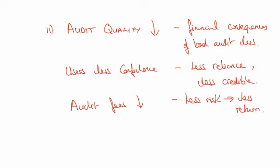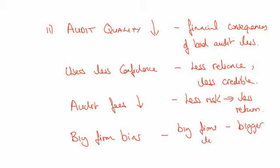Finally, a tricky one: big firm bias. If limited liability agreements were in place, big firms have bigger resources, so they can take on bigger liabilities. If they've got bigger liability agreements, that gives them an unfair advantage in getting clients. A small firm would say it can't afford such a large liability, so its cap will be quite small, and therefore clients might prefer to go to big firms. That's what you want to consider in your answer.